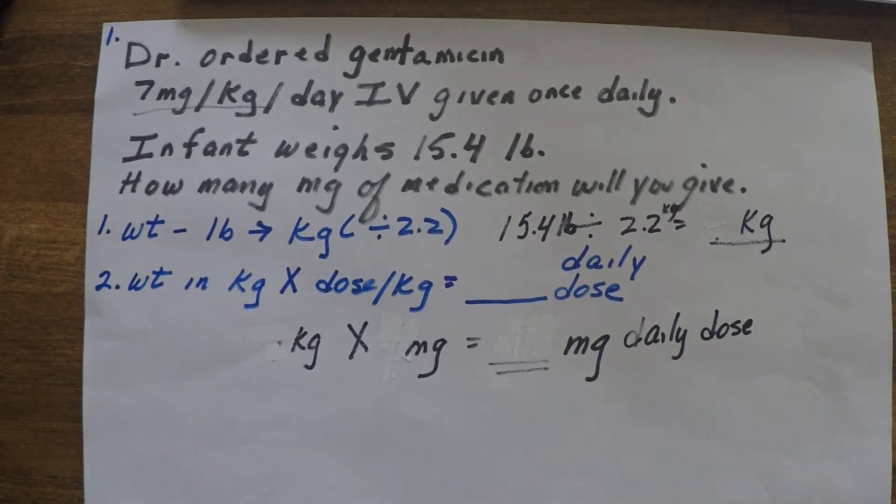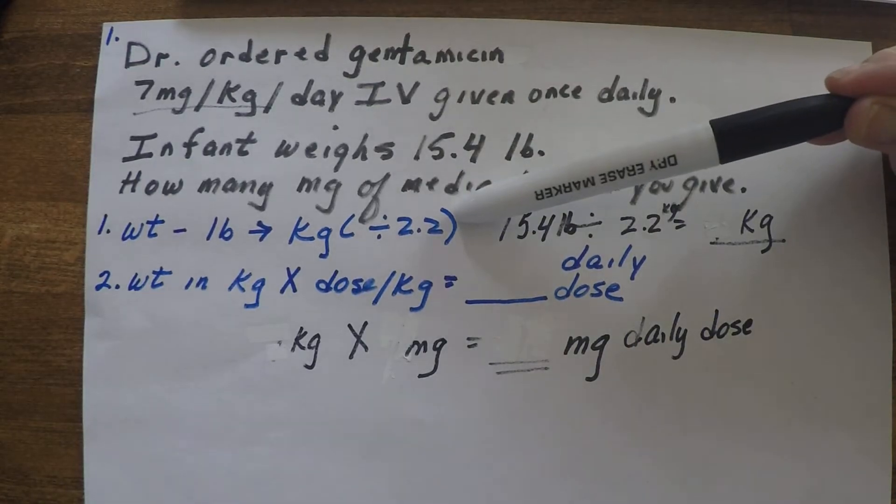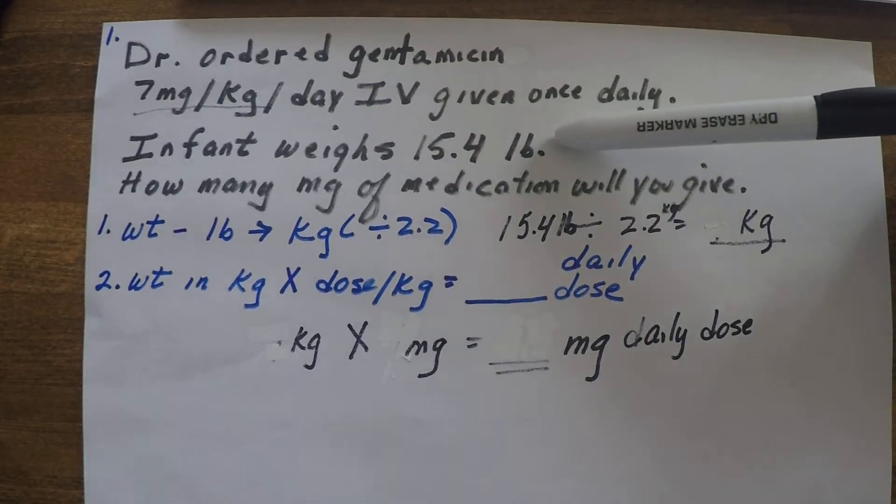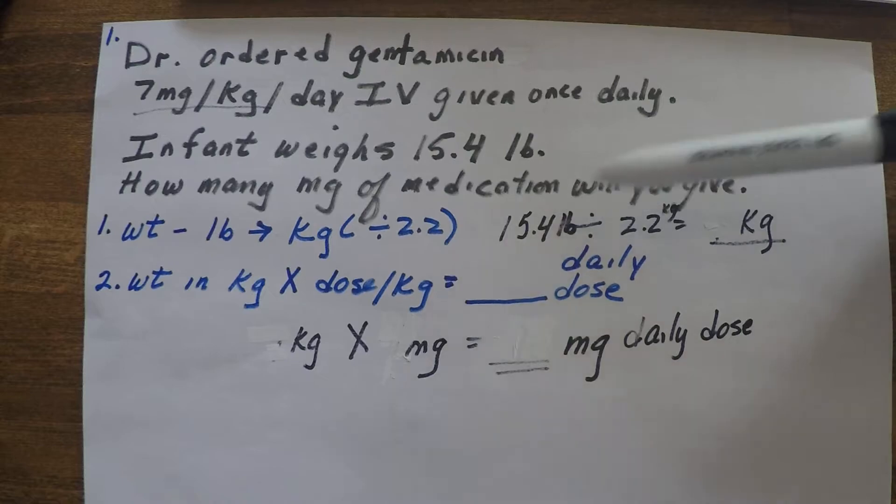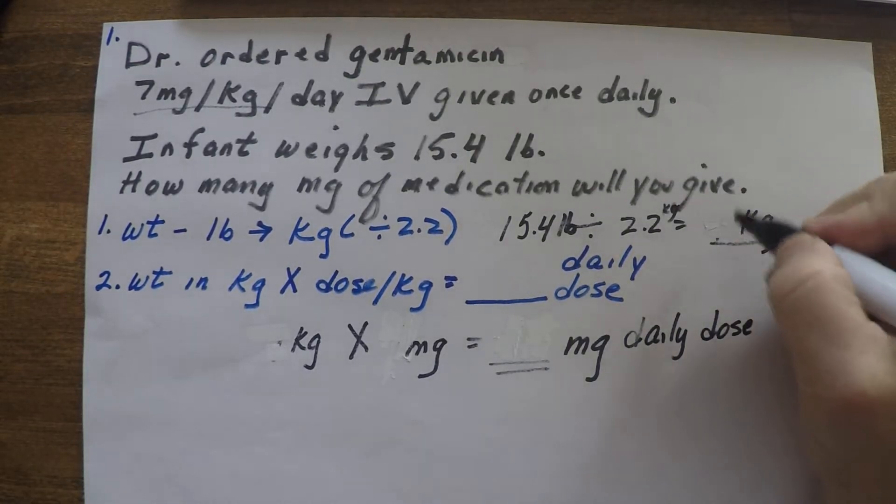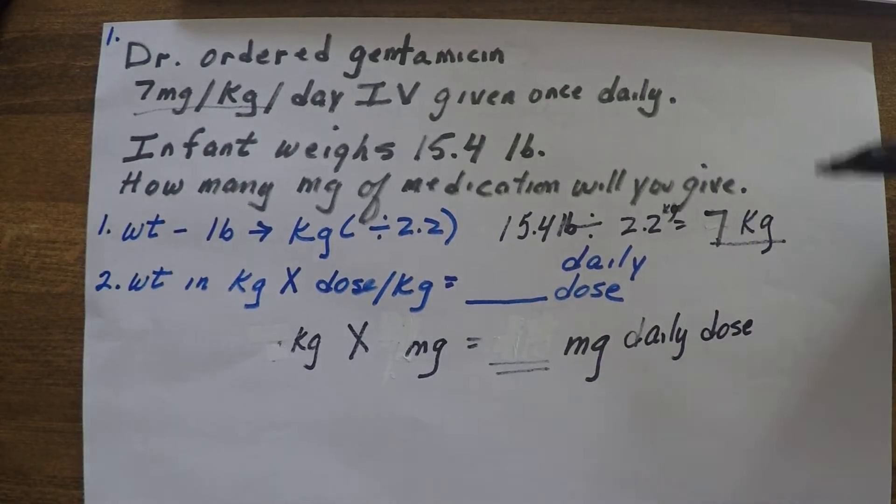So let's go through our steps. The first thing that we want to do in this problem is change the weight from pounds to kilograms. We'll divide by 2.2. So our infant is 15.4 pounds. We'll divide that by 2.2, and that's going to come up with 7 kilograms for our baby.